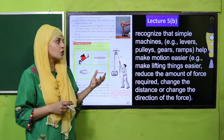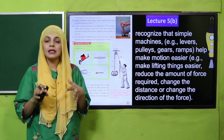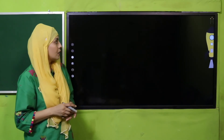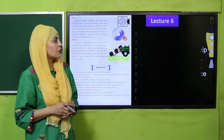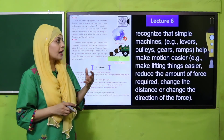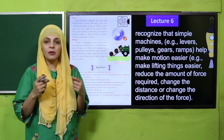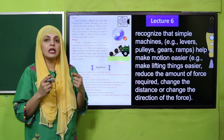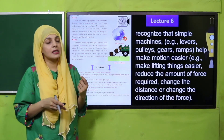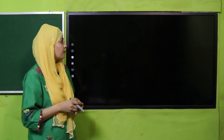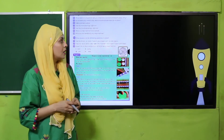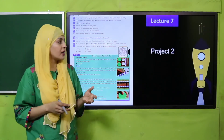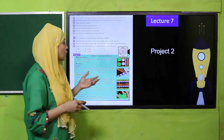In Lecture 5B, the students will again discuss simple machines. In Lecture 6, the students will be able to discuss simple machines one by one — lever, pulley, gear — in tamam ke baare mein hum discuss karte jayenge.